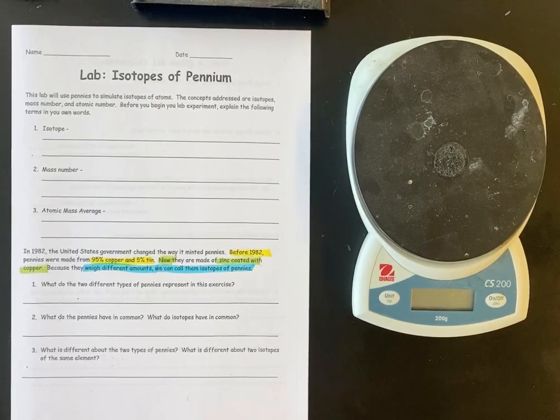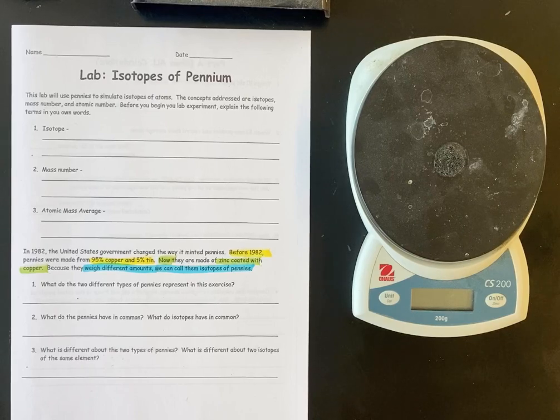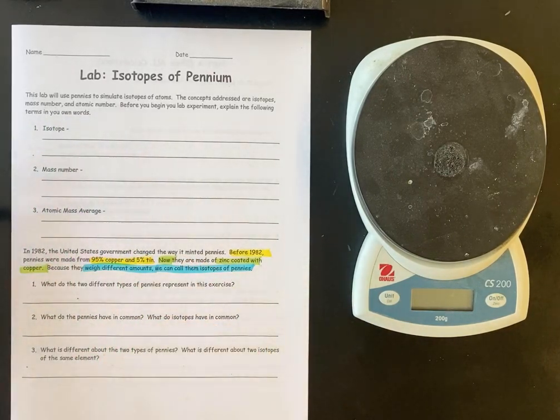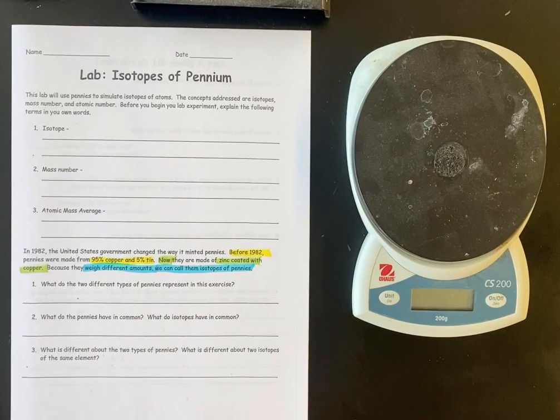Today we're doing a lab called isotopes of pennium. The lab is going to start out with some basic definitions: isotope, mass number, and atomic mass average. Be careful, the mass number and the atomic mass average are not the same thing, so you should know the difference at this point.